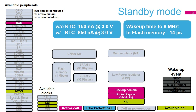In standby mode without SRAM 2, the main regulator and the low-power regulator are powered down. The RTC, clocked by the internal or external low-speed oscillator, can be activated. The brownout reset is always enabled, and the independent watchdog can also be enabled in standby mode. The standby consumption without RTC is 150 nanoamps typical at 3 volts, with a wake-up time of approximately 14 microseconds.